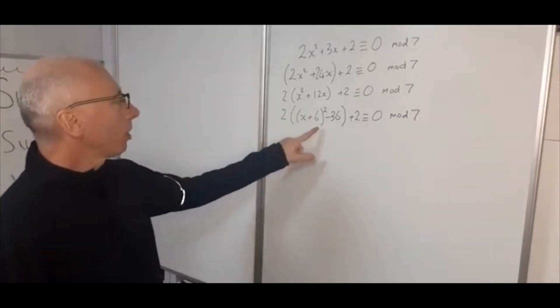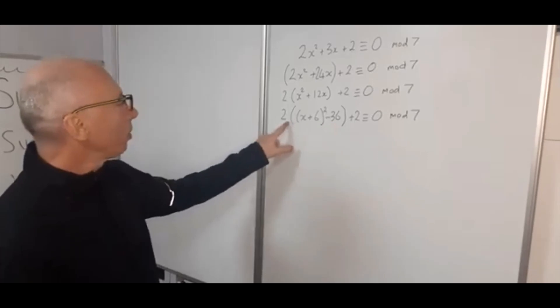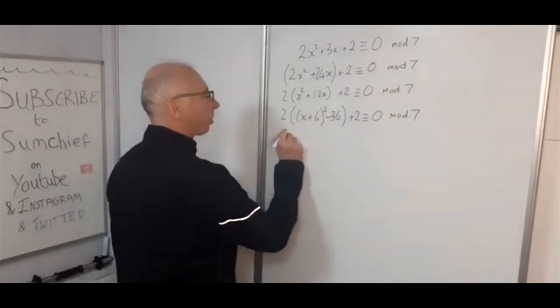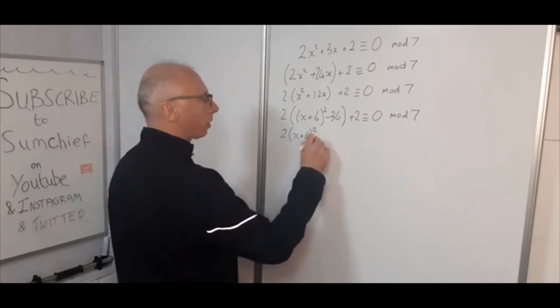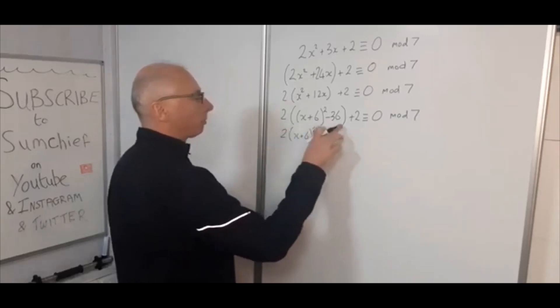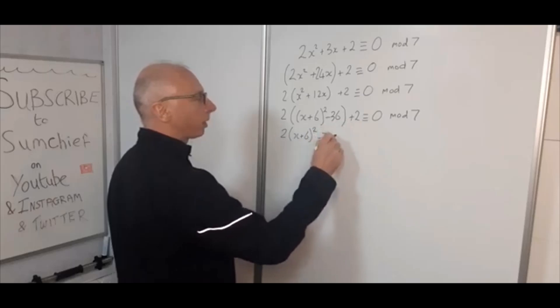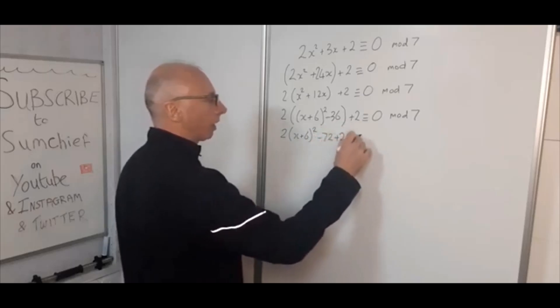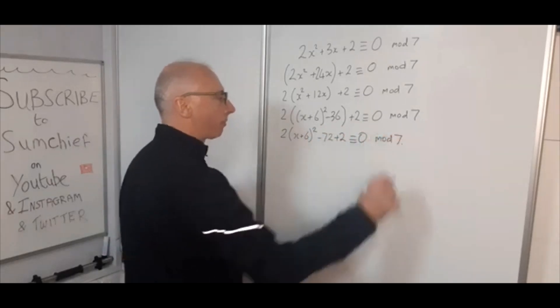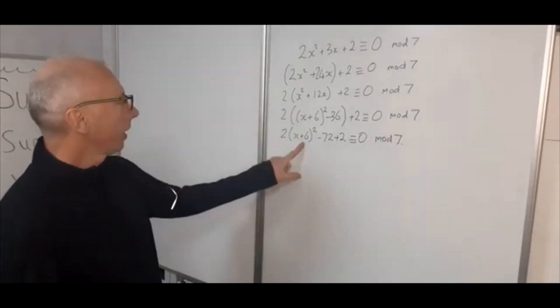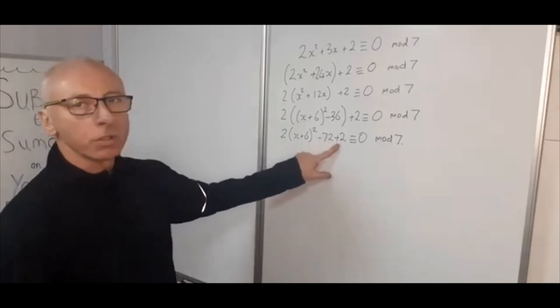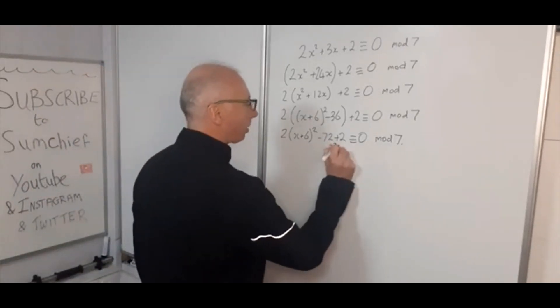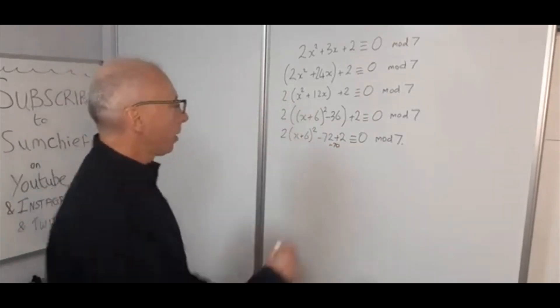Okay, now what we can do is we can perhaps distribute the 2 again. So now we've got 2(x + 6)², 2 times minus 36 becomes minus 72. Now we can get rid of this bracket now, we're not going to need it, and then add 2. And again congruent with 0 modulo 7. Okay, now let's do something with this. So minus 72 + 2, that's going to be minus 70. That's what that's going to equal to there.